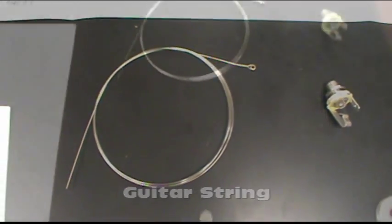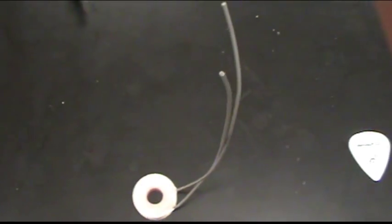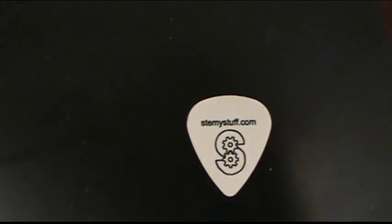An output jack, a guitar string, a strong neodymium magnet. Your pickup coil is a coil of very fine copper wire wound around a plastic bobbin. And of course, a STEMI Stuff guitar pick.